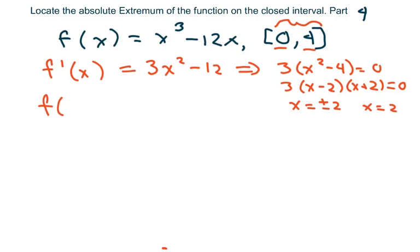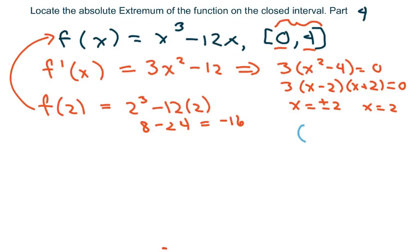So I plug in my 2 to my original equation, and I'm going to get 2 cubed minus 12 times 2. That's going to be 8 minus 24, which equals negative 16. So I do have a critical value at 2, or critical number at 2 comma negative 16.